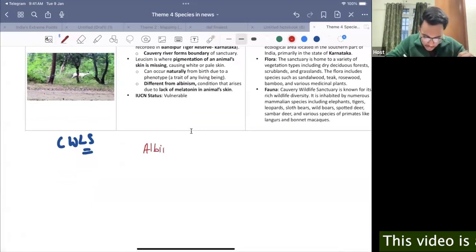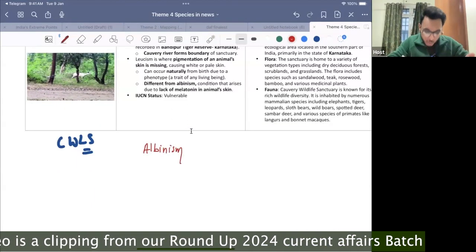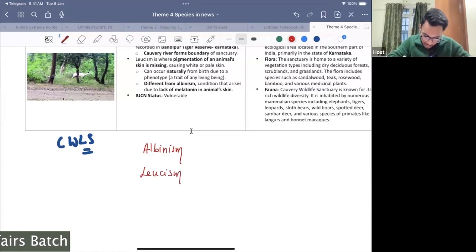Number one is albinism. Number two is leucism. And number three is melanism.